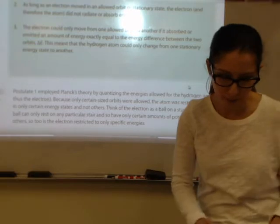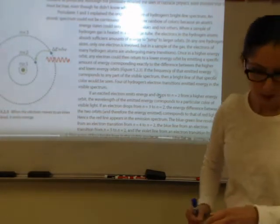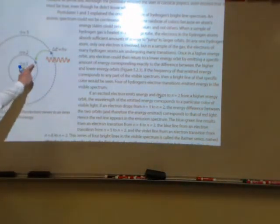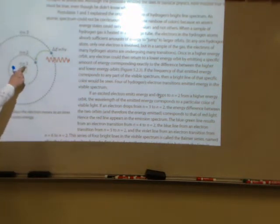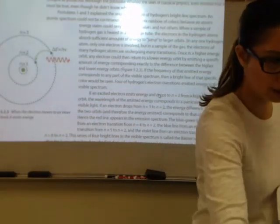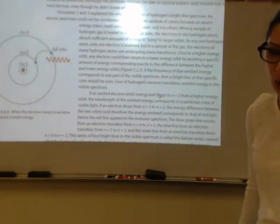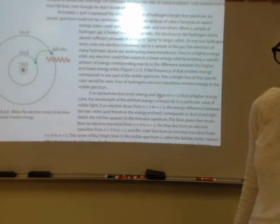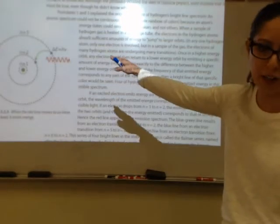Here is a diagram showing the electron as a small blue dot near the nucleus. N equals one is the lowest energy state closest to the nucleus, N equals two is further away, and N equals three is even further away. Because only certain sized orbits are allowed, the atom is restricted to existing in only certain energy states — the electron is restricted to these specific energies.